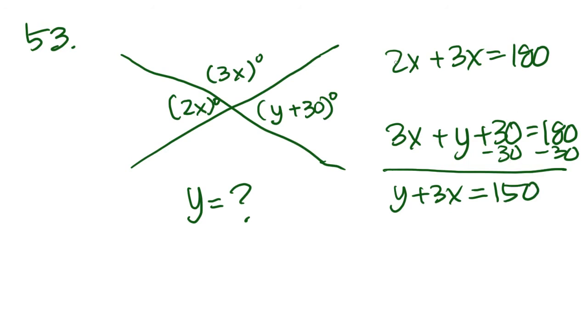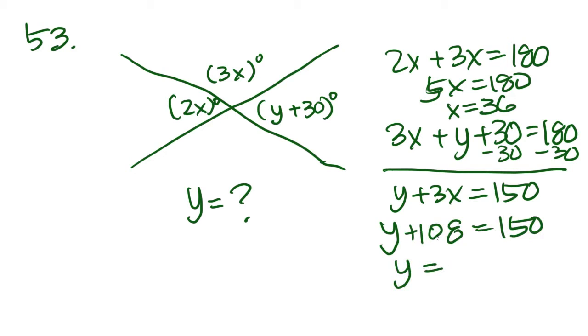Let's see, 2X plus 3X, 5X equals 180. X equals 36. Plug in the X into this bottom equation. You get Y plus 108 equals 150, and Y equals 42. And that is answer choice E.